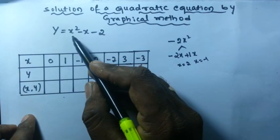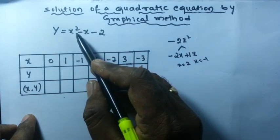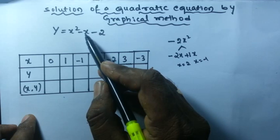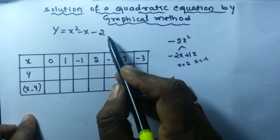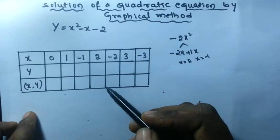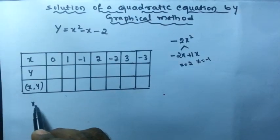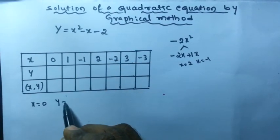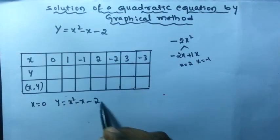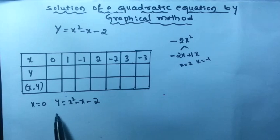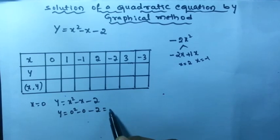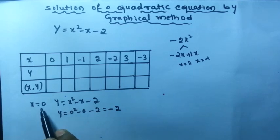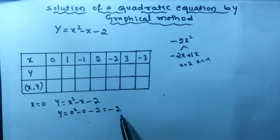You can directly substitute x = 0 into the equation y = x² - x - 2. Zero squared is 0, minus 0, minus 2 gives minus 2. So if you give x = 0 to this equation, y = 0 - 0 - 2 = minus 2.